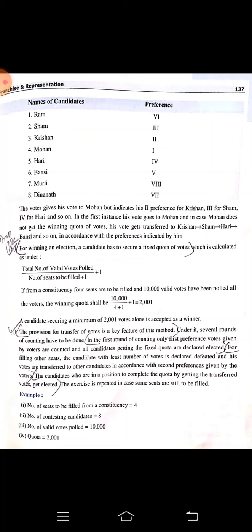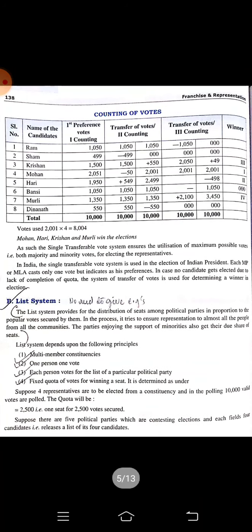For winning an election, a candidate has to secure a fixed quota of votes, calculated as: total number of valid votes polled divided by the number of seats to be filled, plus one. This gives the minimum votes a candidate needs to secure. If, after vote counting, the first-preference candidate Mohan has not succeeded, then the second choice votes of those voters will be transferred and considered.